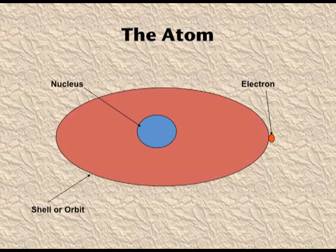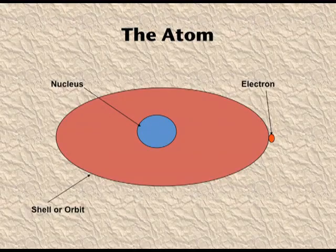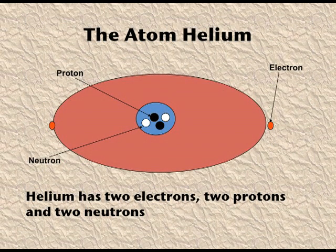Here you can see the electrons and the nucleus containing the protons and neutrons. Now we will study how these electrons, protons, and neutrons are arranged inside the atom. The nucleus is in the centre of an atom and electrons are revolving around it. This is a helium atom.